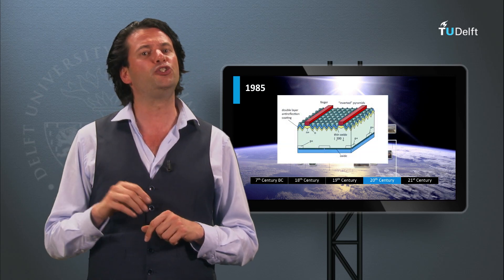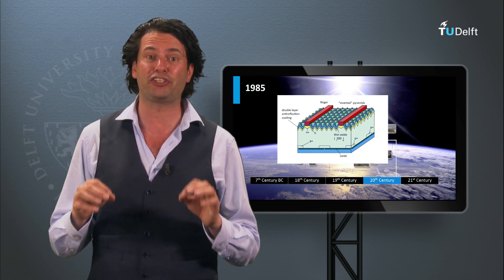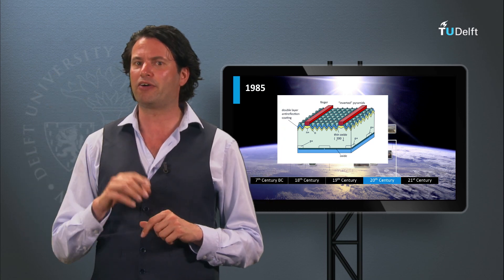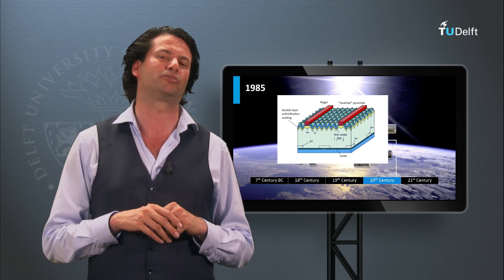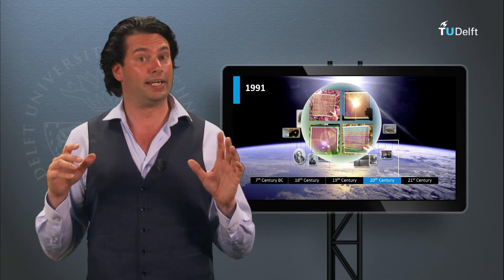In 1985, at the University of New South Wales in Australia, crystalline silicon solar cells with efficiencies above 20% were demonstrated. In week 4, the background and current state of high-efficiency crystalline silicon PV devices will be discussed. From 1984 to 1991, the largest solar thermal energy generating facility in the world was built. These 9 solar plants built in the Mojave Desert in California have a combined capacity of 354 MW.